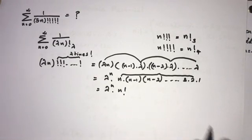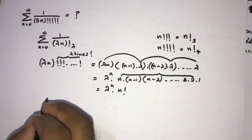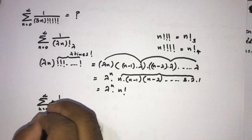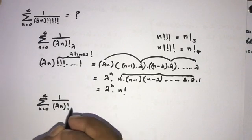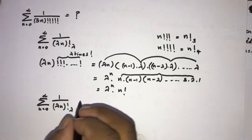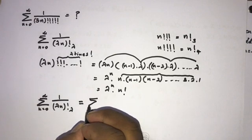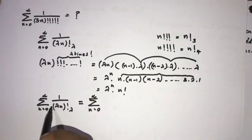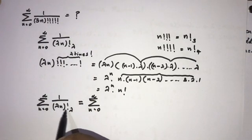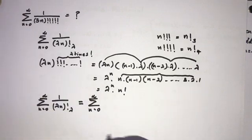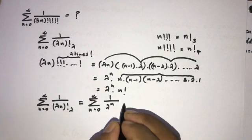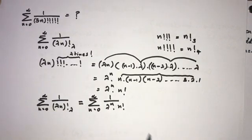Now we can rewrite the sum: the sum from 0 to infinity of 1 over (lambda·n)!⁽λ⁾ equals the sum from 0 to infinity of 1 over lambda^n times n factorial.